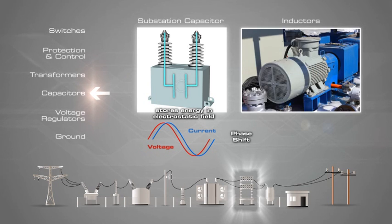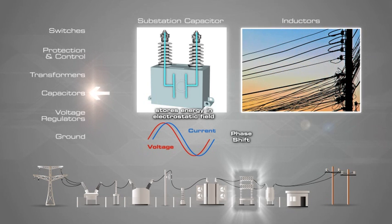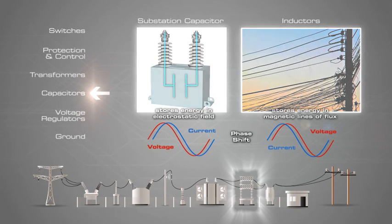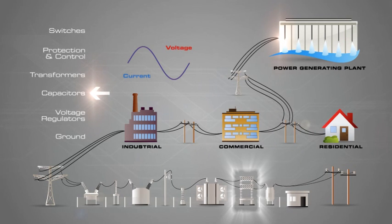Capacitive loads will cause a phase shift between the voltage and current where current will lead voltage. Inductive loads such as motors, transformers, inductors, and wire also cause a phase shift between voltage and current. Inductive loads store energy in the form of magnetic lines of flux, and the phase shift caused by an inductive load is opposite to that of a capacitive load, where voltage will lead current. Capacitor banks are used to correct the phase shift caused by the inductive nature of the transmission system and the loads.